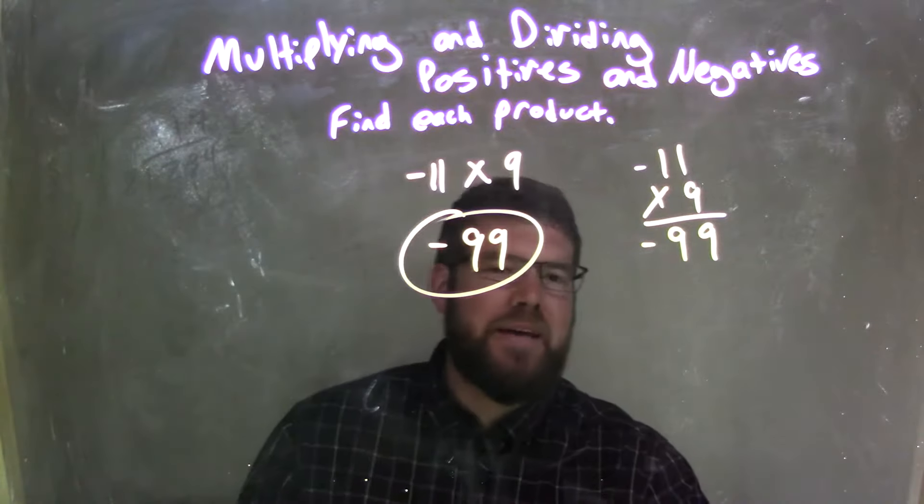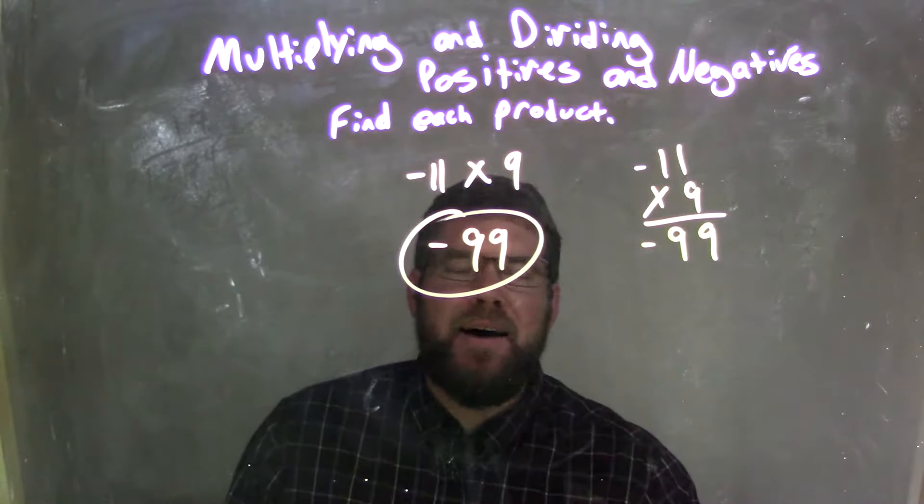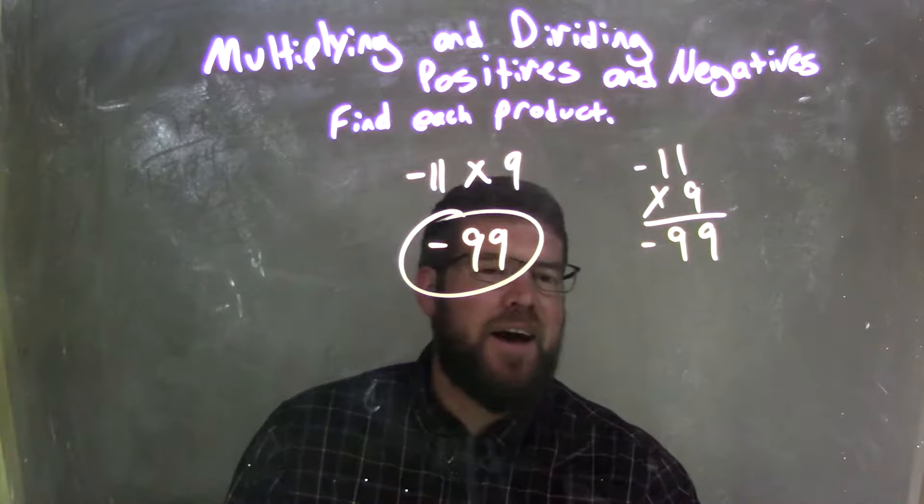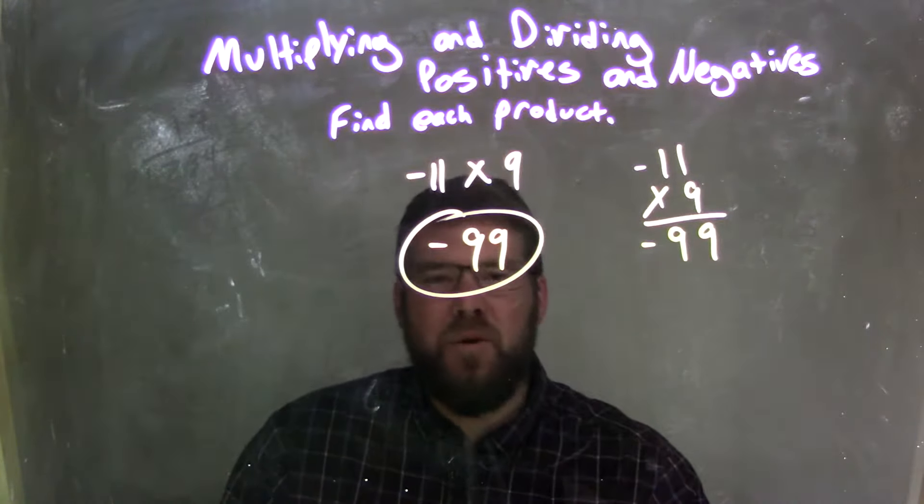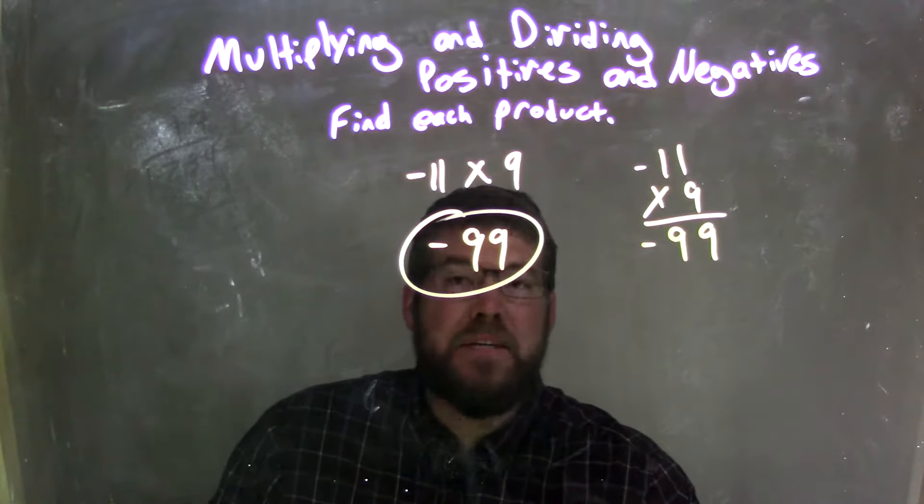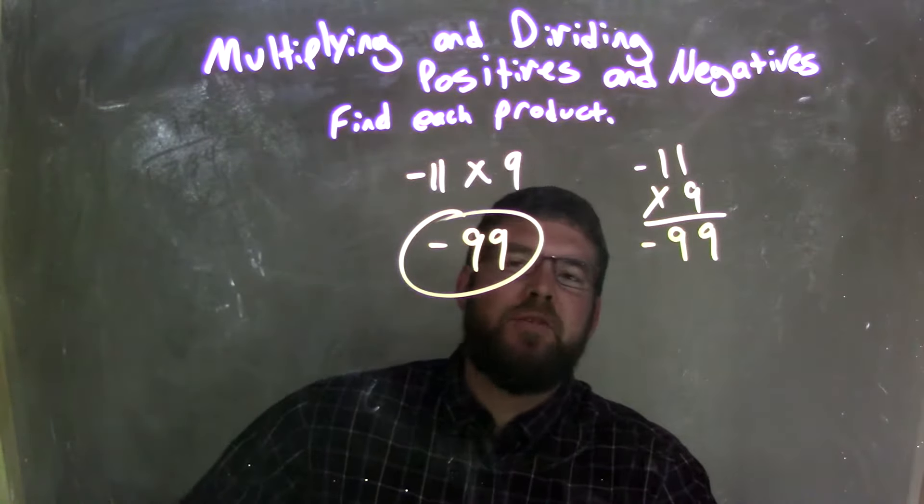Now, 9s or 11s are pretty easy to remember. 9 times 11 is 99, 8 times 11 is 88. Especially with the lower number ones, it's pretty easy. It's one of the earlier ones you'll remember for two-digit multiplication.